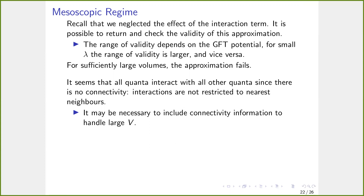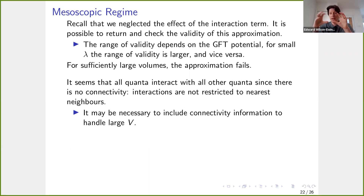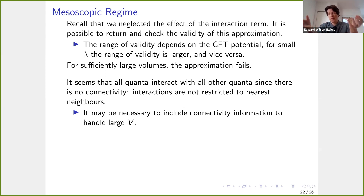The reason we have this issue is that we neglected connectivity entirely to make the calculation simpler. If you start entangling quantum geometries to connect them in a certain way, the calculation becomes much more complicated. Because there's no connectivity, interactions are not restricted to nearest neighbors — essentially all other quanta are nearest neighbors to each other — which is why interactions grow very rapidly when you have a large number of quanta. To really handle the large-volume limit, we'll likely need to include connectivity information. This is an outstanding problem that's important to address.